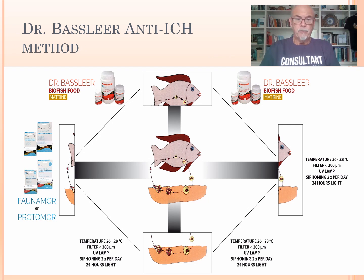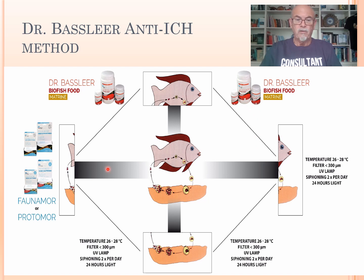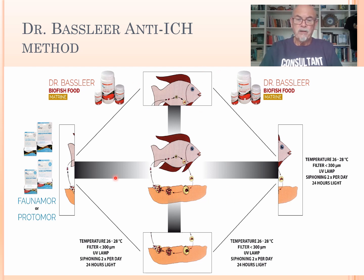Let me explain my Dr. Baslier anti-Ick method, available on our website. The parasite has a cycle that takes about 5 to 10 days depending on temperature — it drops off and multiplies when dropped off, then reinfects other fish or the same fish in the aquarium. It's at this reinfection stage you can control it with medications like Pharnamore or Protamore. We also recommend feeding with Dr. Baslier buy fish food matrine, because that protects the skin against reinfection and changes the skin so parasites easily drop off.